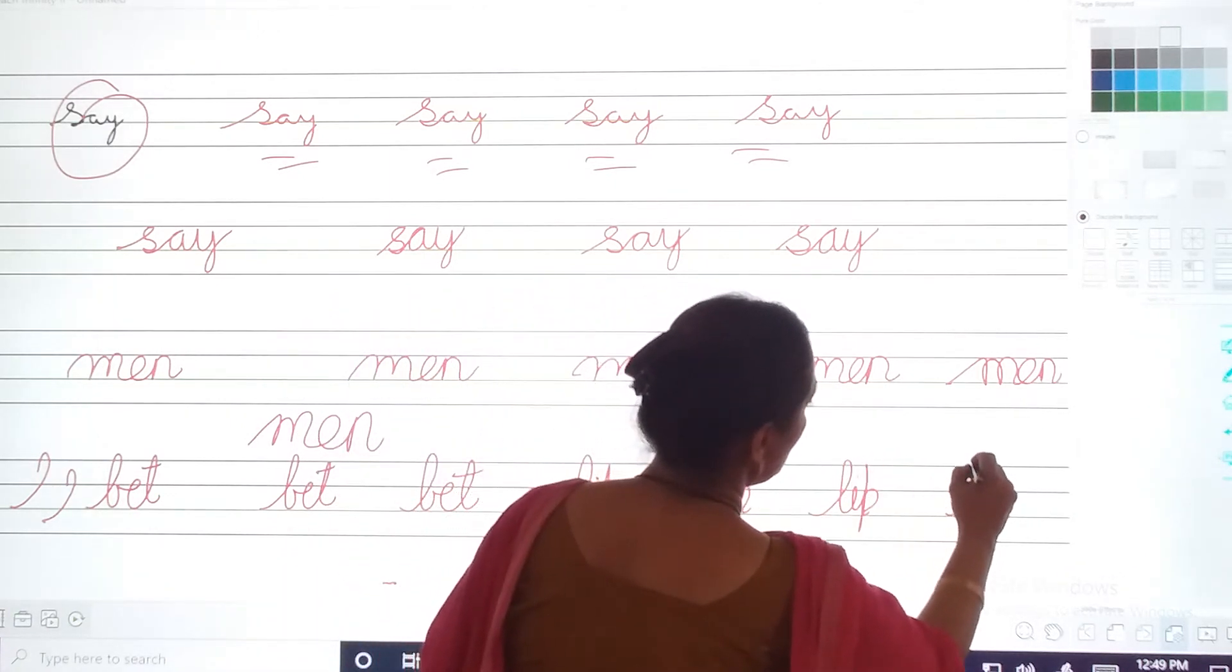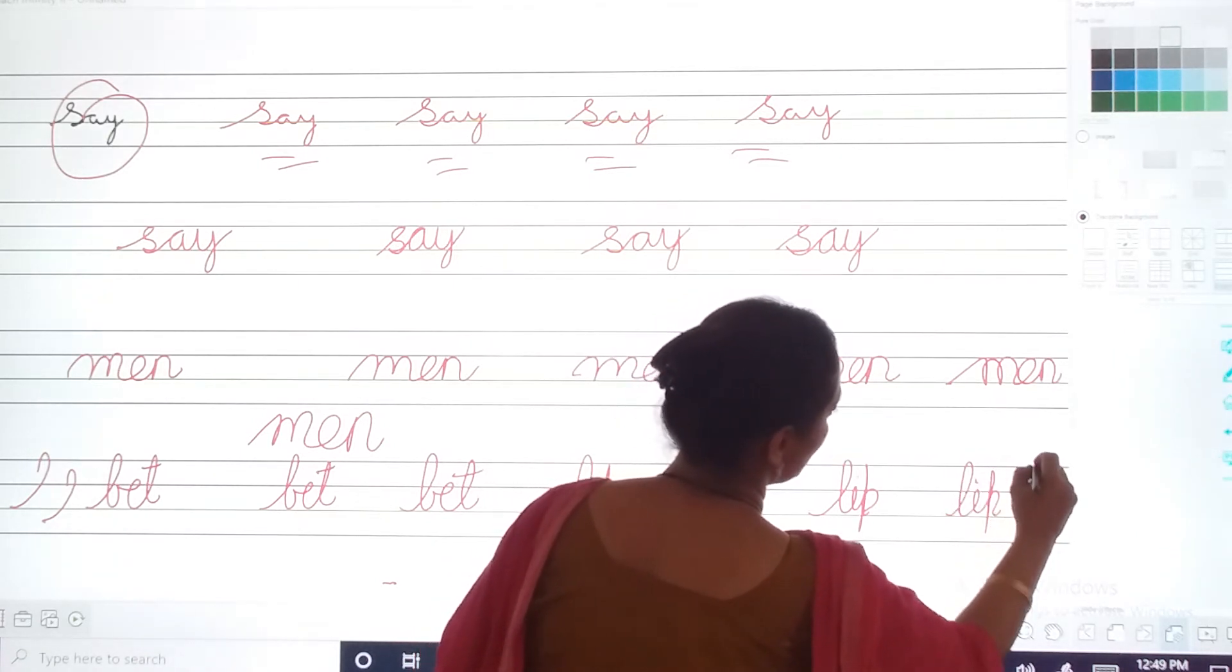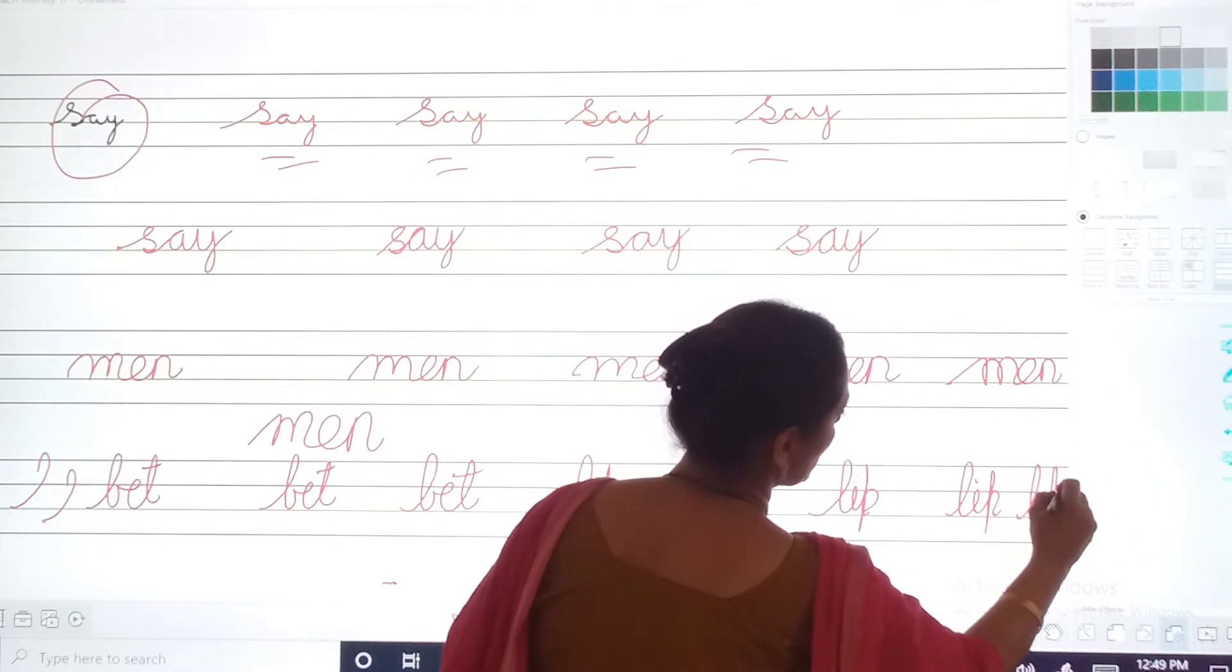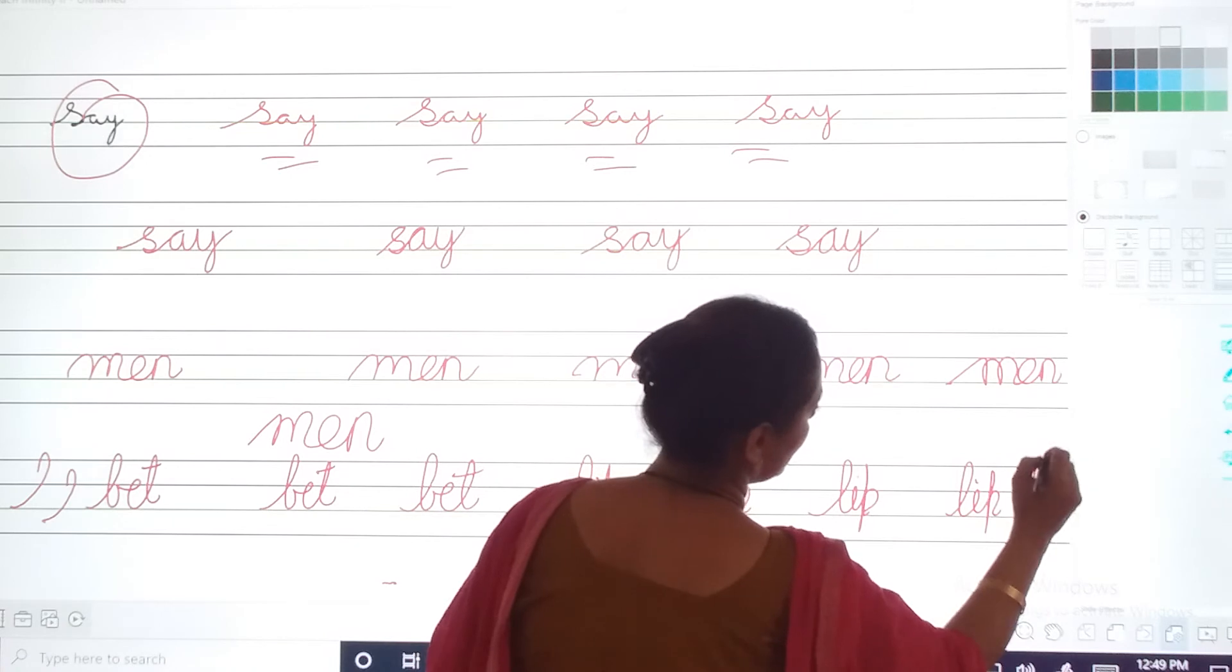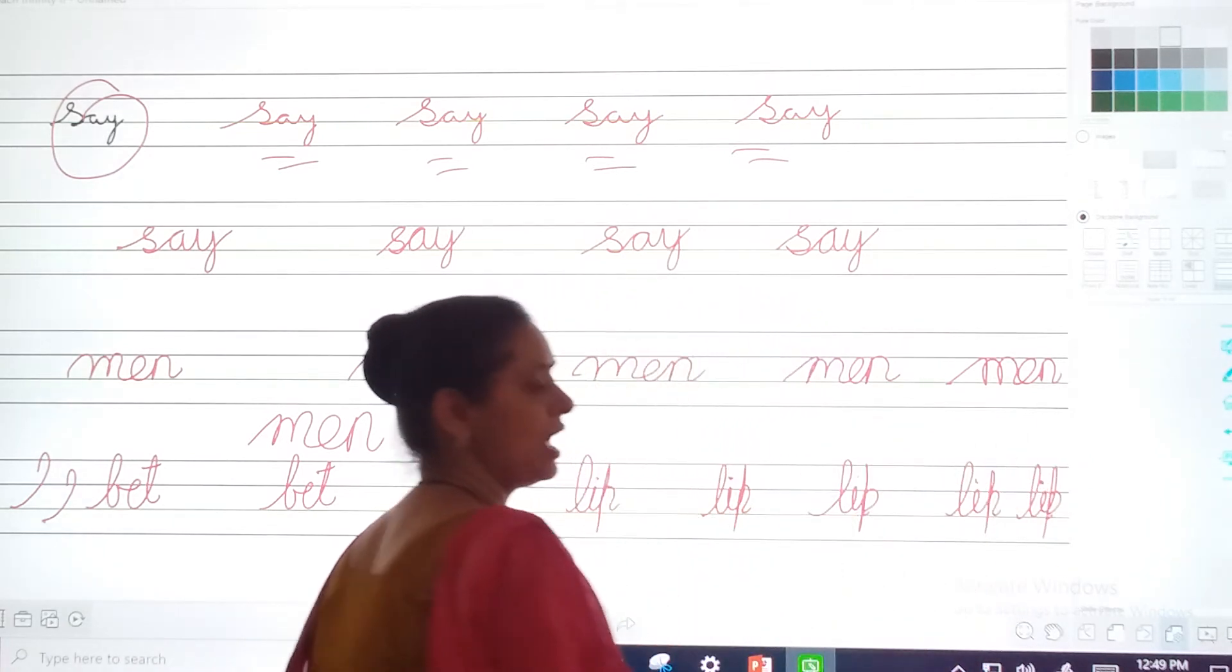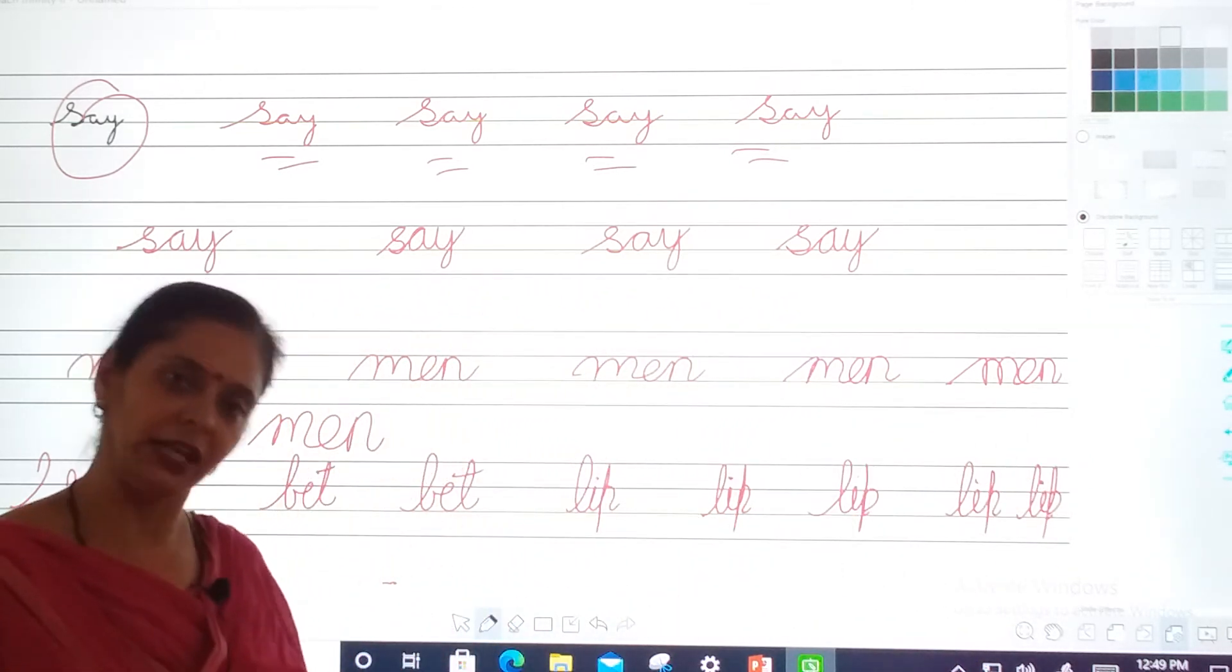L, I, P, lip. Once again. L, I and Pura usko touch kia. This is lip. L, I, P, lip.